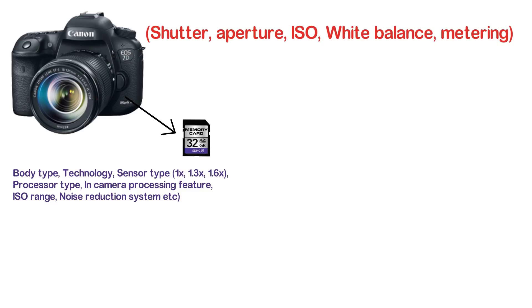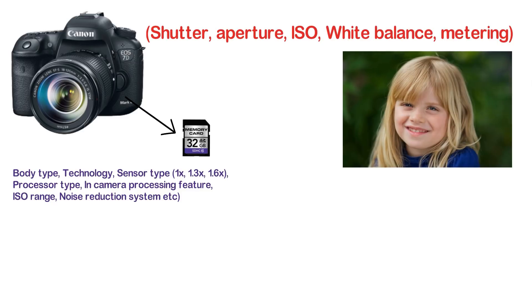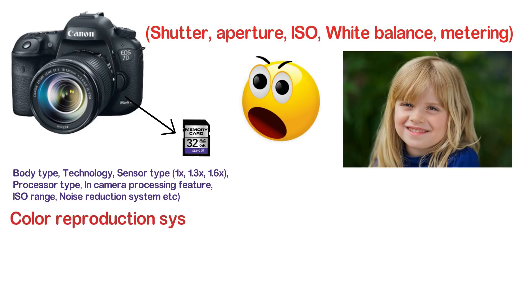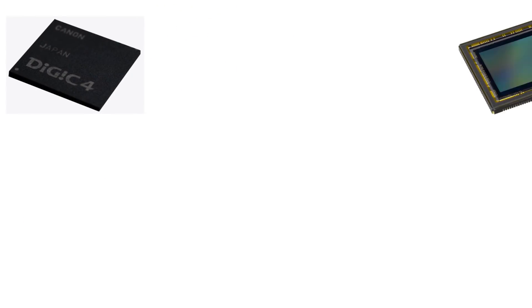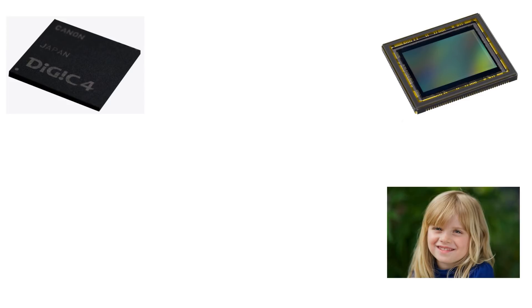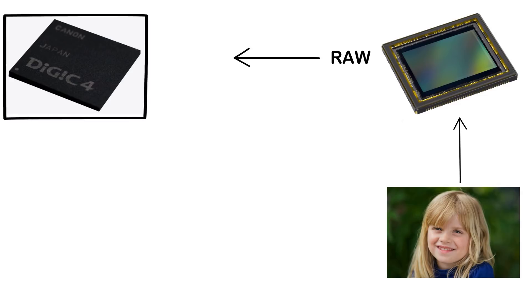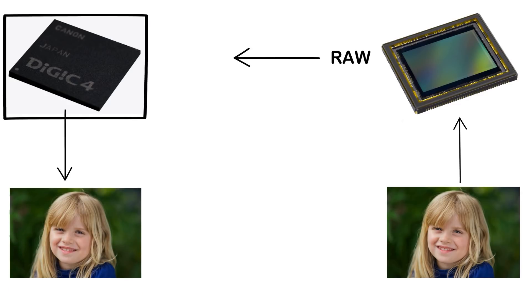This is very important. For example, in a camera, the color reproduction system is handled by the processor. It is a set determined by the sensor. You can copy the sensor, copy the white balance, and then press the color reproduction file to edit it.